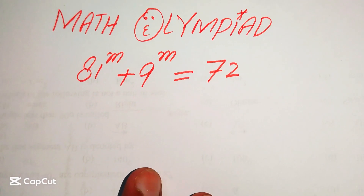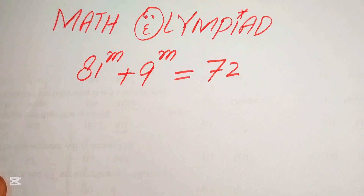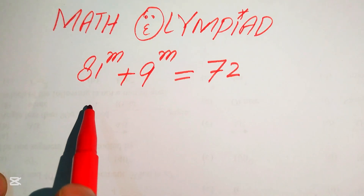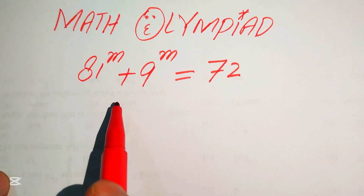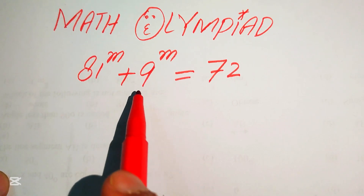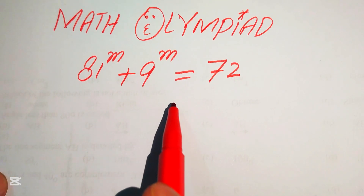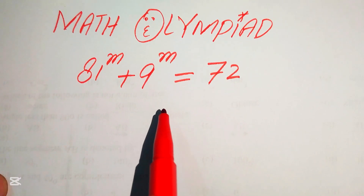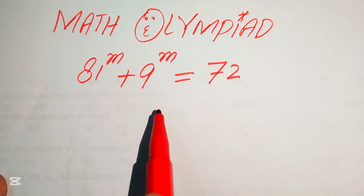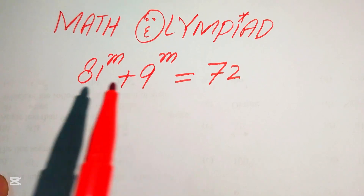Hello everyone, welcome to solving this nice applied algebra problem. Here we have 81 to the power of m plus 9 to the power of m equals 72, and we solve this problem for the values of m.